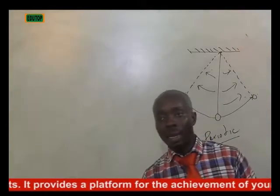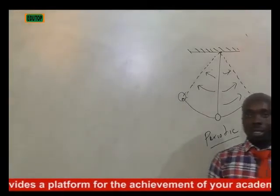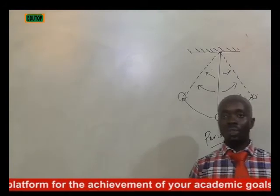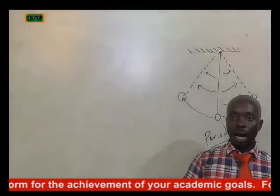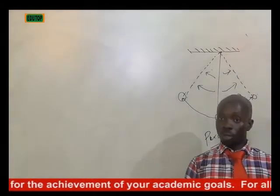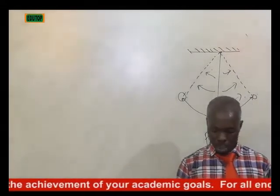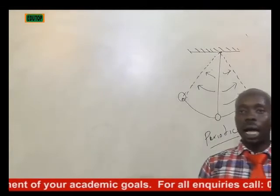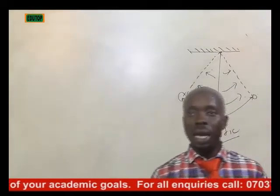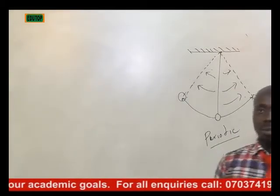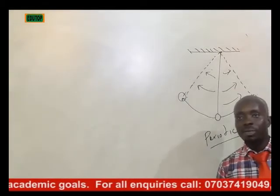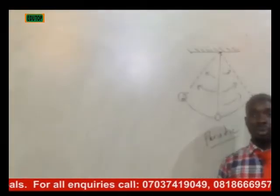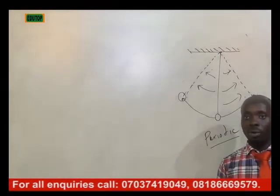A balanced wheel of a watch is an example of periodic motion. The rotation of the Earth around its axis is also an example of periodic motion. Now let's go to another one — relative motion. This is the motion in relation to a frame of reference.